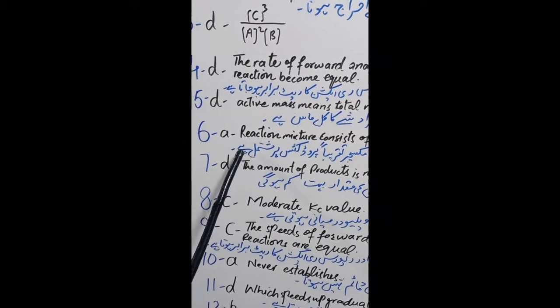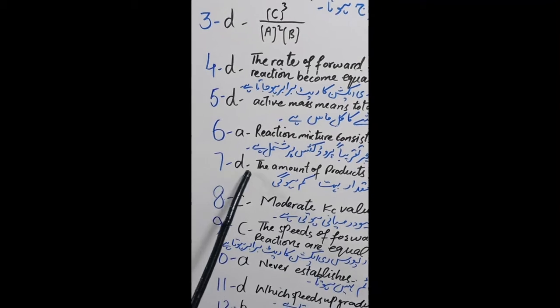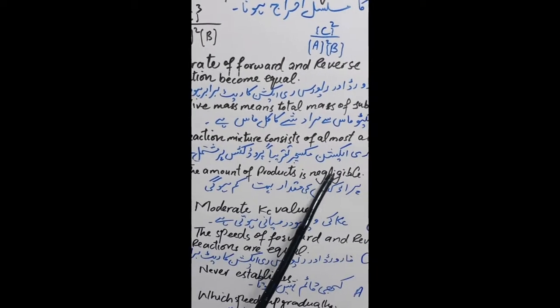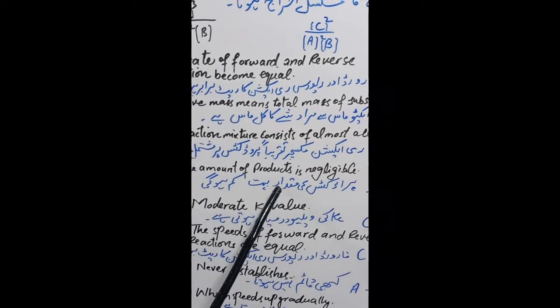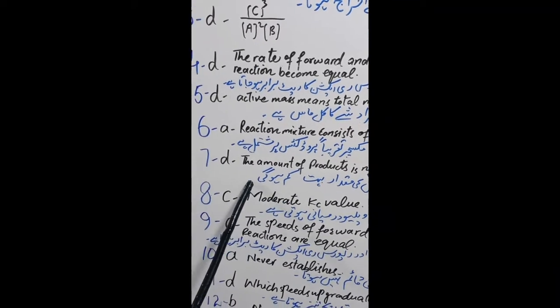Question 7: D. The amount of products is negligible. Answer D. Products ki miqdaar bahut kam hogi.